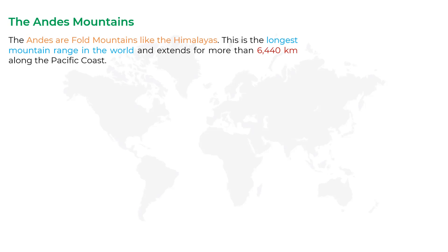The Andes are the longest mountain range in the world and extend for more than 6,440 kilometers along the Pacific coast. Fold mountains are created where two or more of the Earth's tectonic plates are pushed together, and the Andes were created in this way. The Himalayas are also folded mountains.